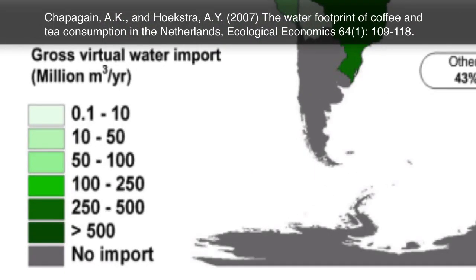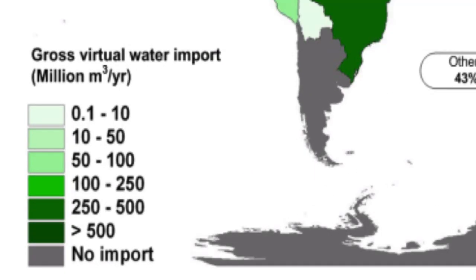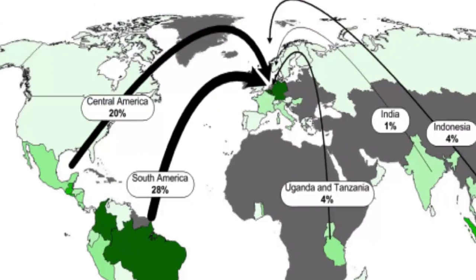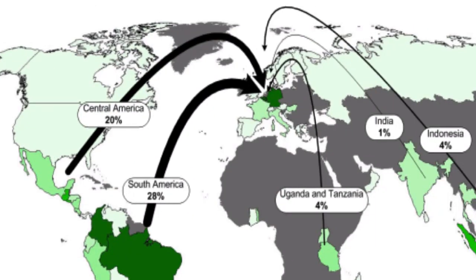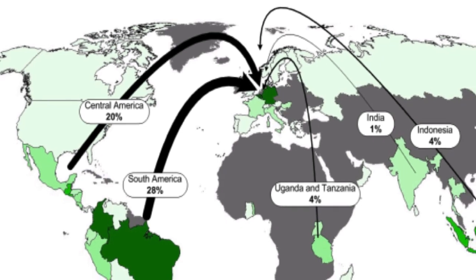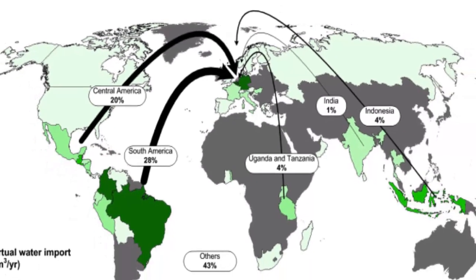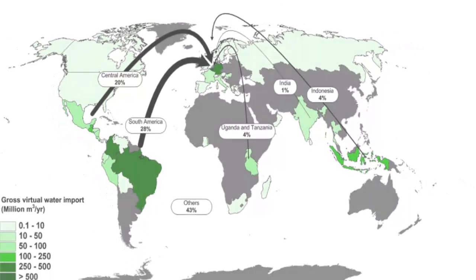This image is a case study on coffee and tea for the Netherlands. As shown, because coffee and tea are water-intensive crops, they result in a large virtual water footprint.